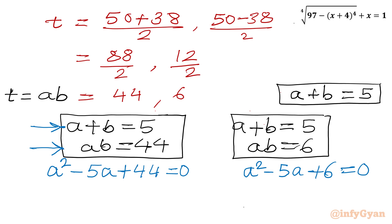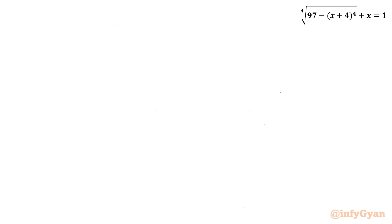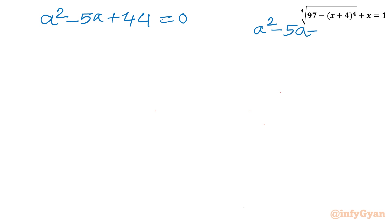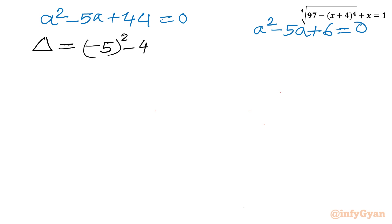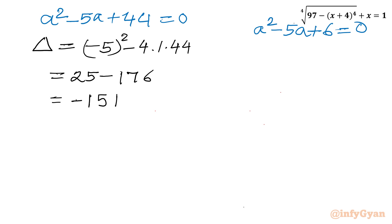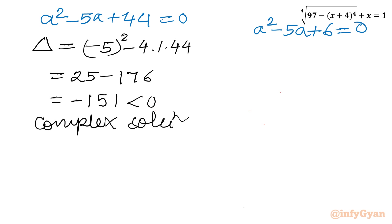For the first equation A squared minus 5A plus 44 equal to 0, let's check the discriminant: delta equals (minus 5) squared minus 4 times 1 times 44, which gives 25 minus 176 equal to negative 151. Because the discriminant is negative, we get complex solutions, so we reject this case.